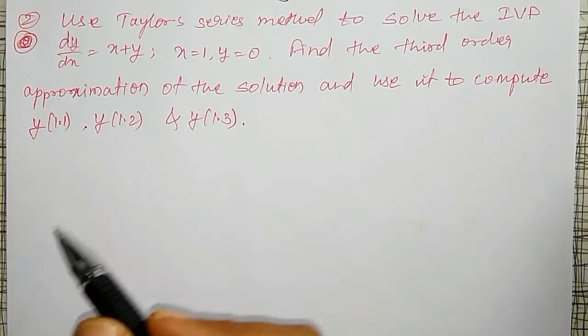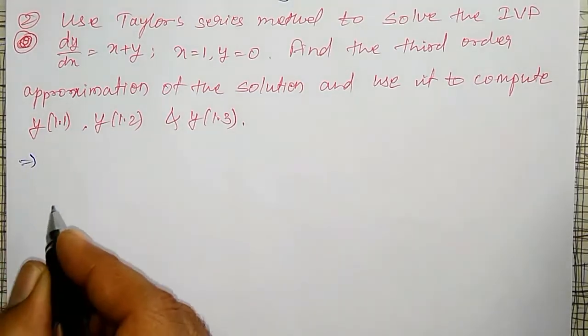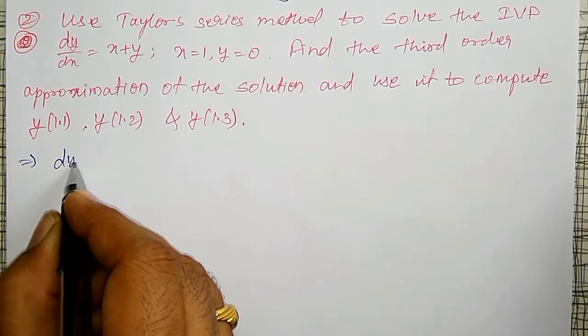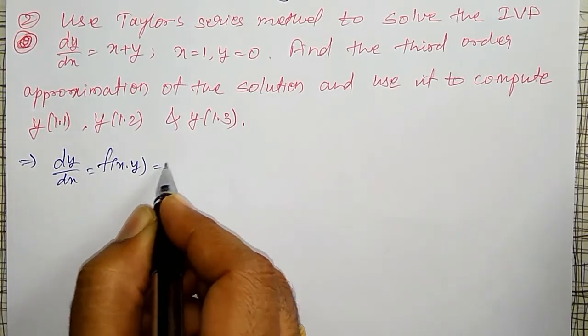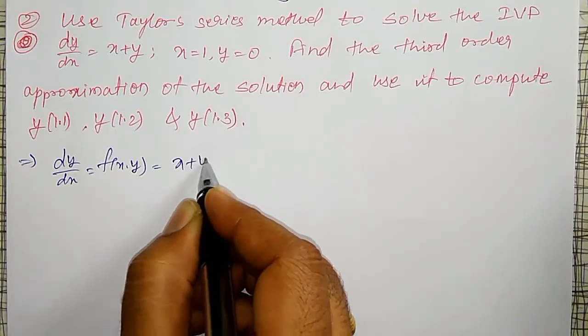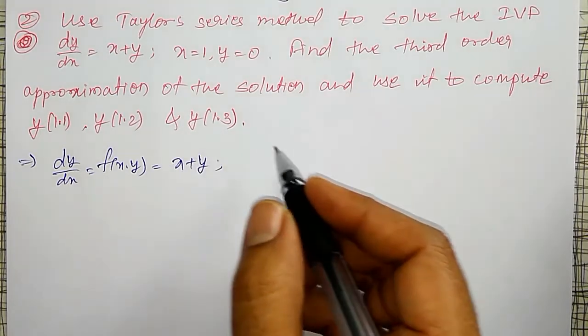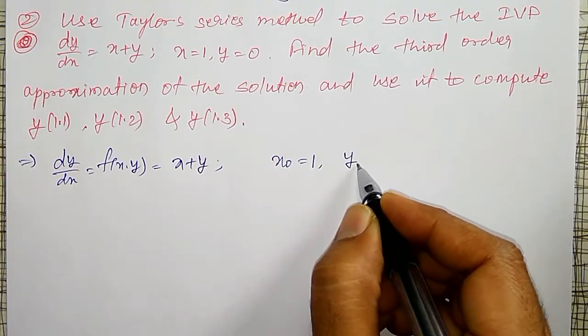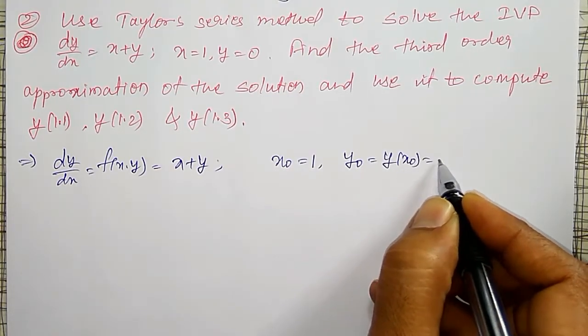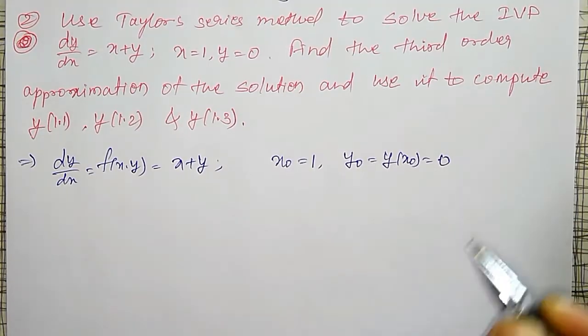I am going to solve here. Given is dy/dx = f(x,y) = x + y, and x₀ = 1 and corresponding y₀, that is y(x₀), they are given it as 0.